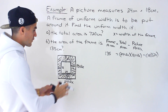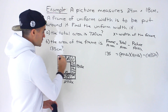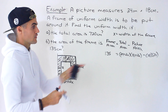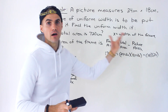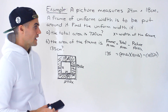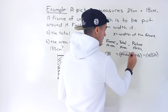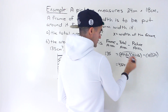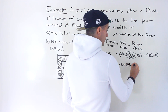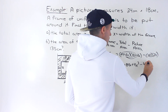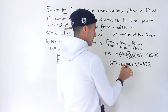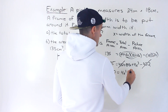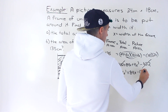Expanding the total area gives 432 + 36x + 48x + 4x squared, which is 432 + 84x + 4x squared. Subtracting the picture area of 432 cancels those terms. Bringing 135 over gives: 0 = 4x squared + 84x − 135.